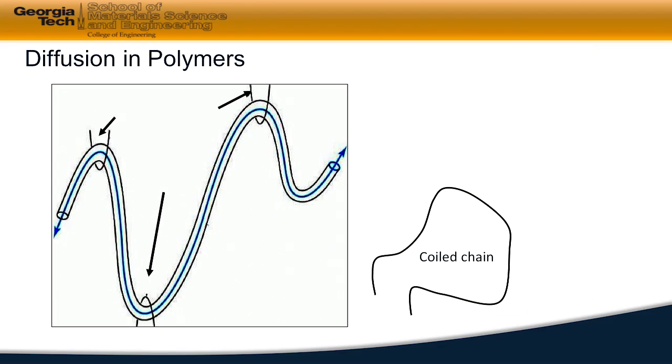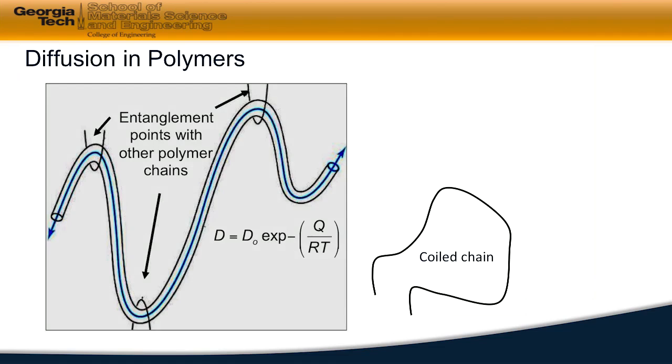Now what we will see is as we increase the concentration of polymers in this solution, we're going to begin to see that we have entanglement points that are associated with other polymer chains interacting. So the more polymer chains that we have in the system, what we'll see is more and more possible entanglements.